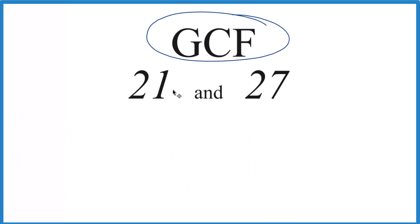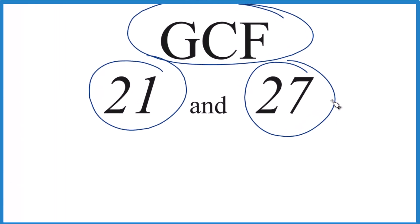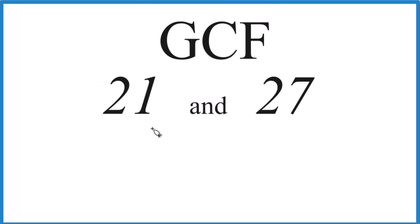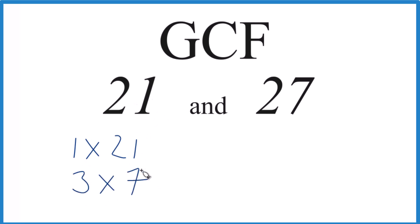So we're going to make a list of all the factors of 21 and 27. Then we'll compare the lists and find the factor that's the greatest — the one that's common between these two, but it's the greatest. So for 21: 1 times 21 equals 21, and 3 times 7. I think that's it.